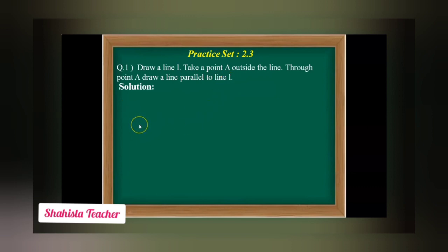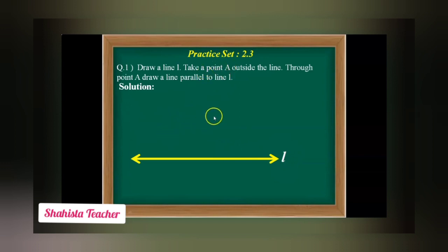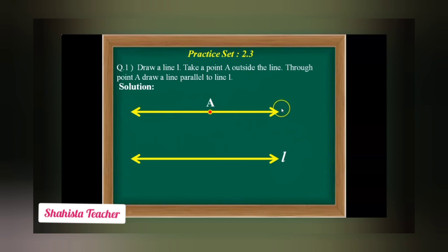First we have to draw a line — that is line L. Give it the name line L. After this, take a point A outside line L. Now with this point we have to draw one line which is parallel to line L. Give it the name M. So line L is parallel to line M, and point A is taken outside line L.